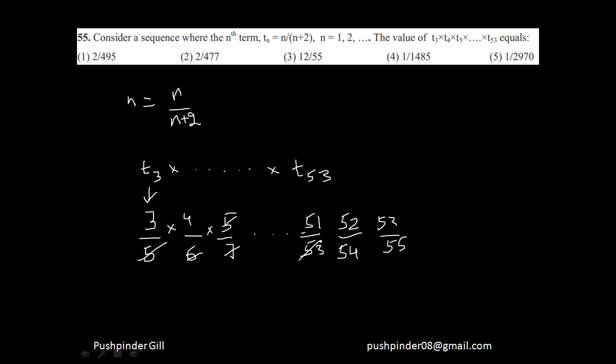As you can clearly see this is going to get cut and from this this is also going to get cut. And I'll be left with these two numbers from here and these two numbers from here. That means my answer will be 3 times 4 divided by 54 times 55.